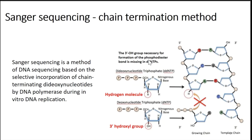In Sanger sequencing, instead of the hydroxyl group, we have a hydrogen molecule — so it's called the dideoxynucleotide triphosphate. Because there's no hydroxyl group, no additional nucleotide can be added to the growing chain. That's why we call it chain termination: when this nucleotide is added to the growing DNA chain, it stops and cannot go further.